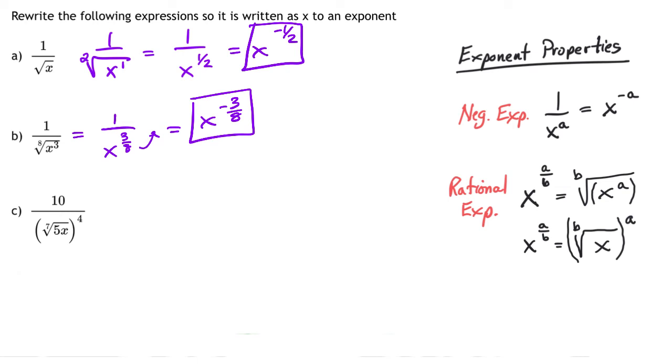The third one is the same kind of deal. You're going to have this whole denominator that we're going to figure out first. The 5 and x are all together being taken to the fourth power and the seventh root. So I can say I have 5x all to the power of 4/7, where 4 is your power and 7 is your root. And I still have the 10 on top.